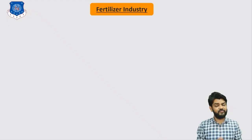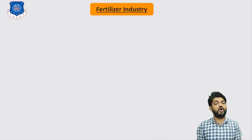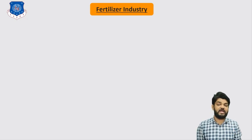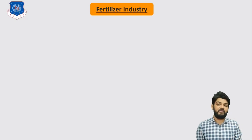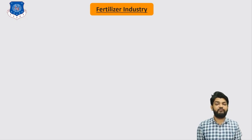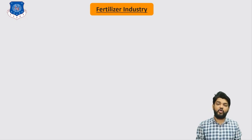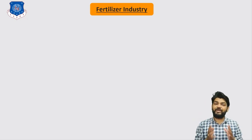In the previous video we started the new chapter on fertilizer industries, where we understood the production of ammonia by discussing the flow sheet and process description. If you missed that video, you can find it via the i-button.